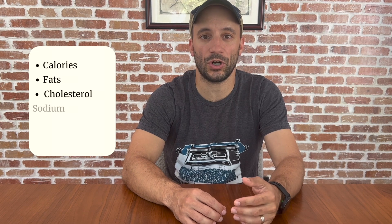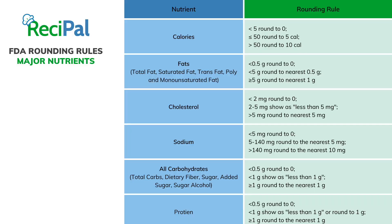Let's start with the major nutrients: calories, fats, cholesterol, sodium, carbohydrates, and proteins. Each of these nutrients has different value ranges, and each value range is rounded differently. We're going to get into that.